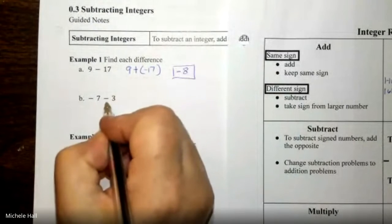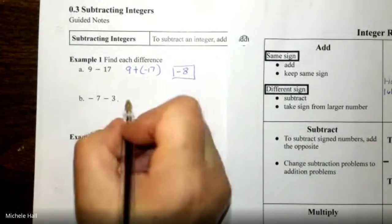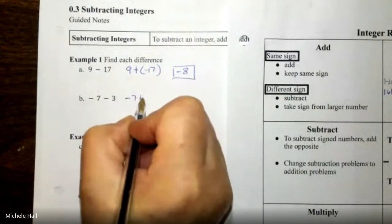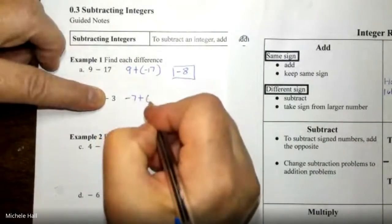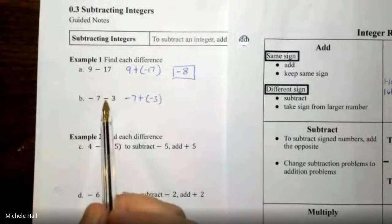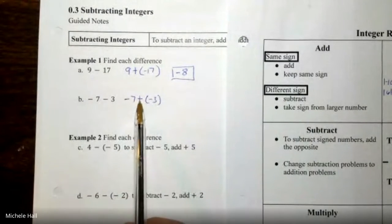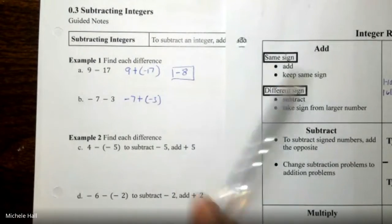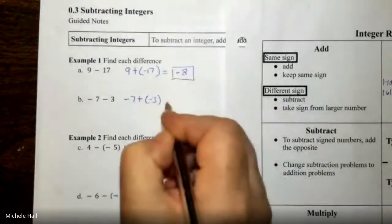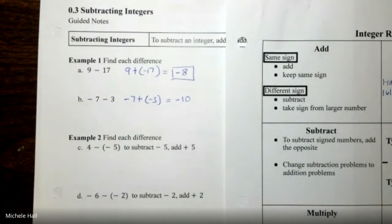We have negative 7 subtracting 3. We make this an addition problem. The additive inverse of 3 is negative 3, so we put a plus sign and place negative 3 in parentheses. We are adding negative 7 and negative 3 — the same sign. When adding the same sign, we add and keep the sign. 7 plus 3 is 10, so negative 7 plus negative 3 equals negative 10.